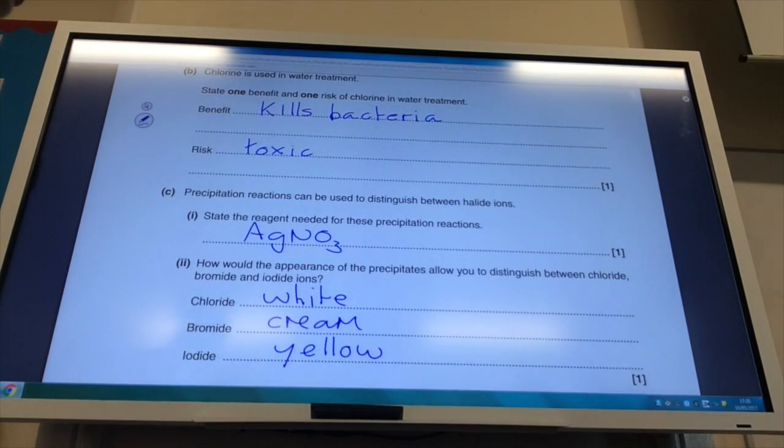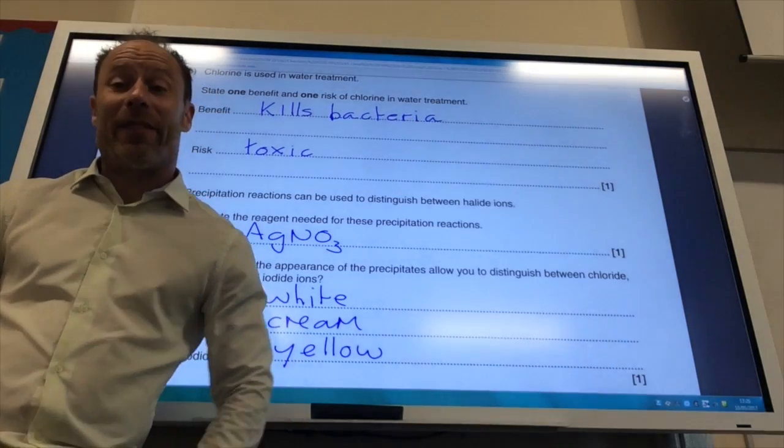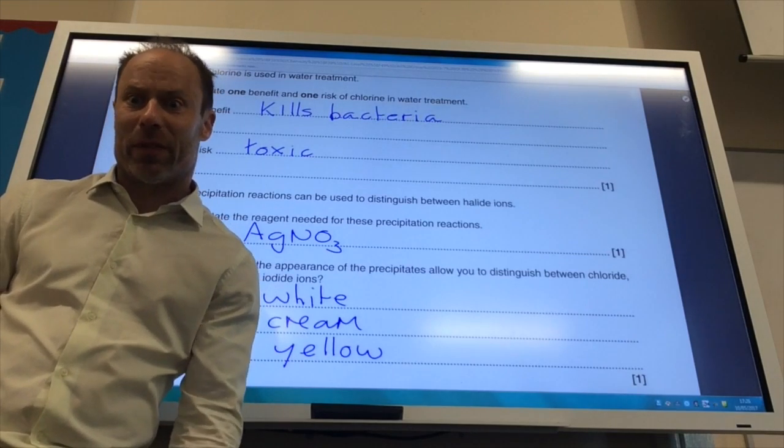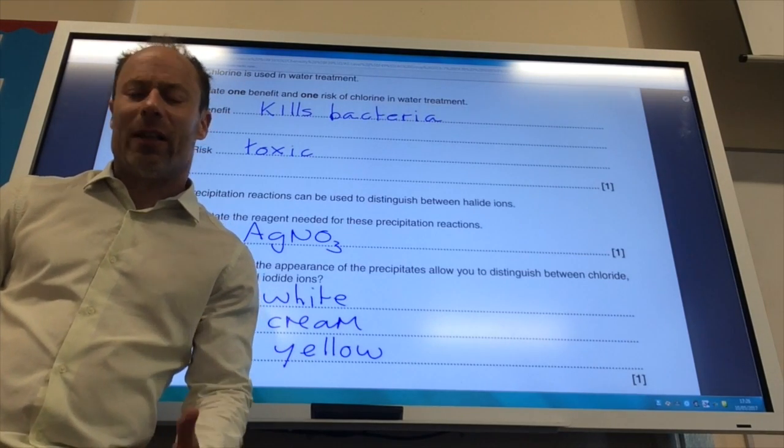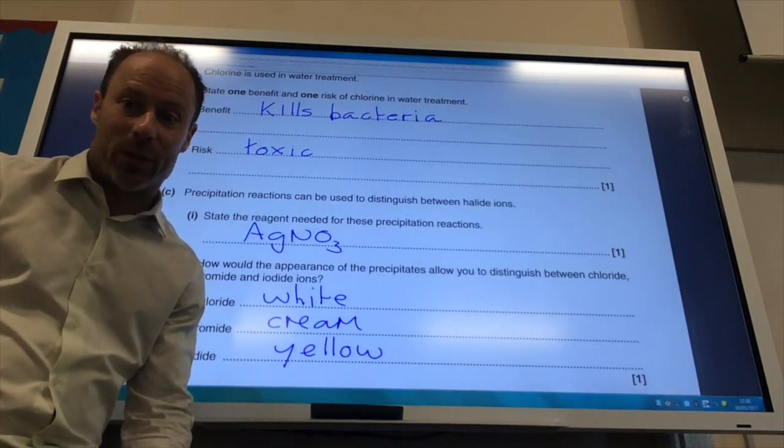Okay, so I'll pop the answers on there for B and C. So the first one is we can use chlorine for water treatment. What's the benefit? Well it kills bacteria, which is obviously why we do it. But it is a toxic chemical at the end of the day. You won't have too much chlorine.